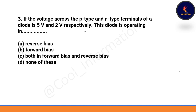Next question: If the voltage across the P-type and N-type terminals of a diode is 5 volt and 2 volt respectively, the diode is operating in — option A: reverse bias condition, option B: forward bias, option C: both forward and reverse bias, option D: none of these. The correct option is option A — reverse bias.